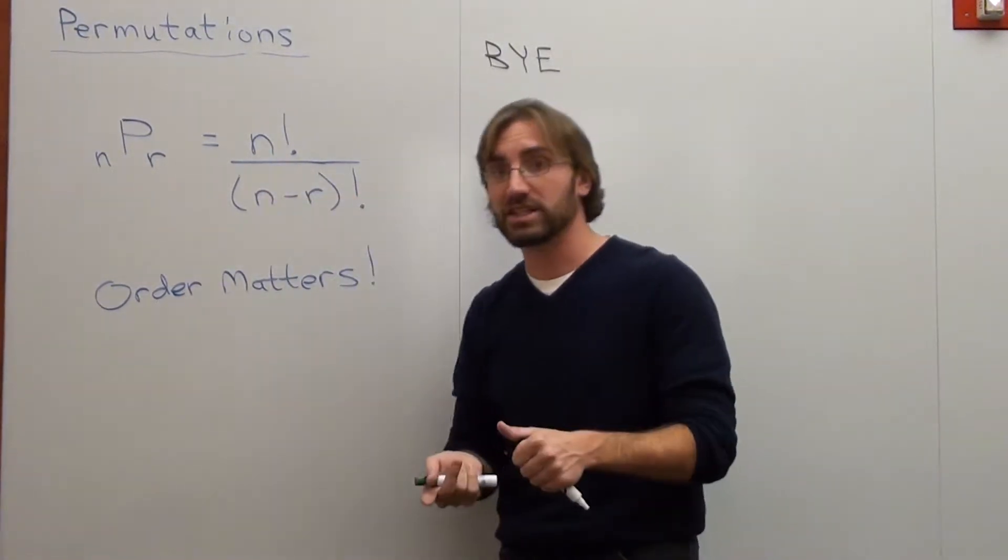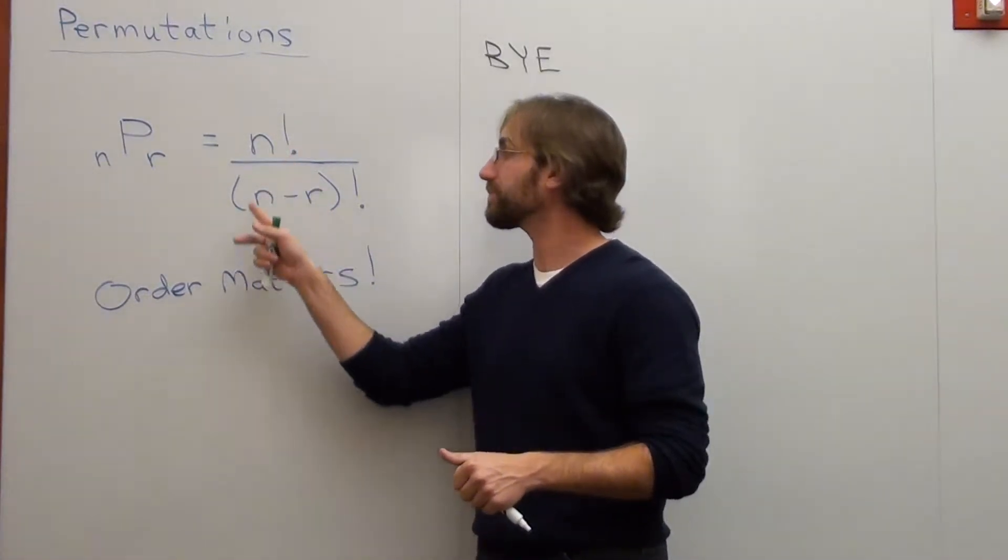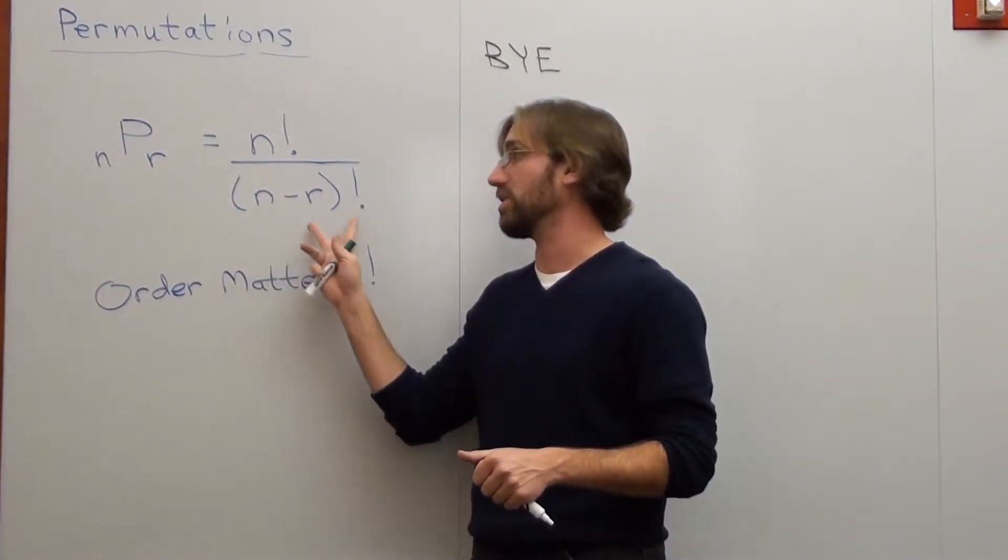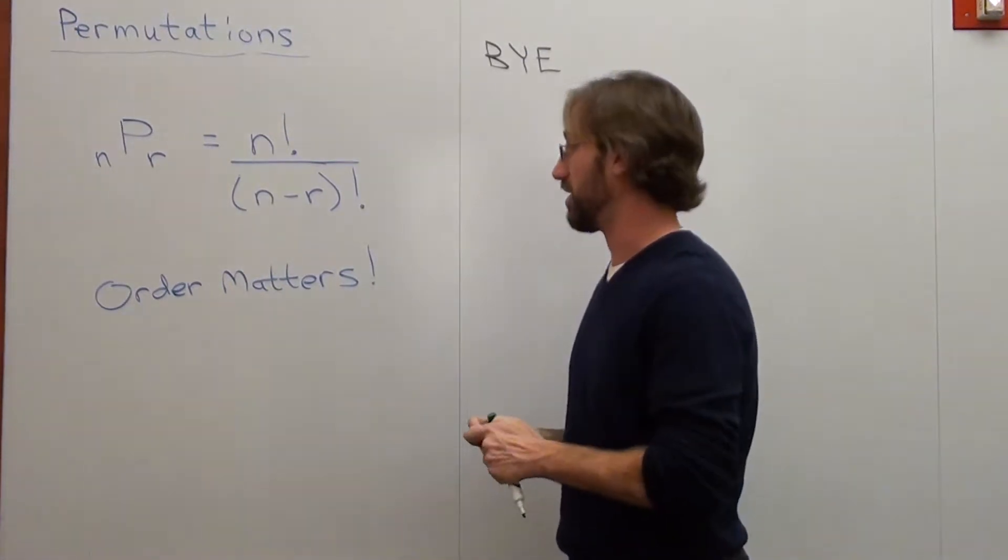This reads N factorial. It's not an exclamation mark, it's factorial. And this is the quantity of N minus R factorial. I'll explain what a factorial is momentarily.